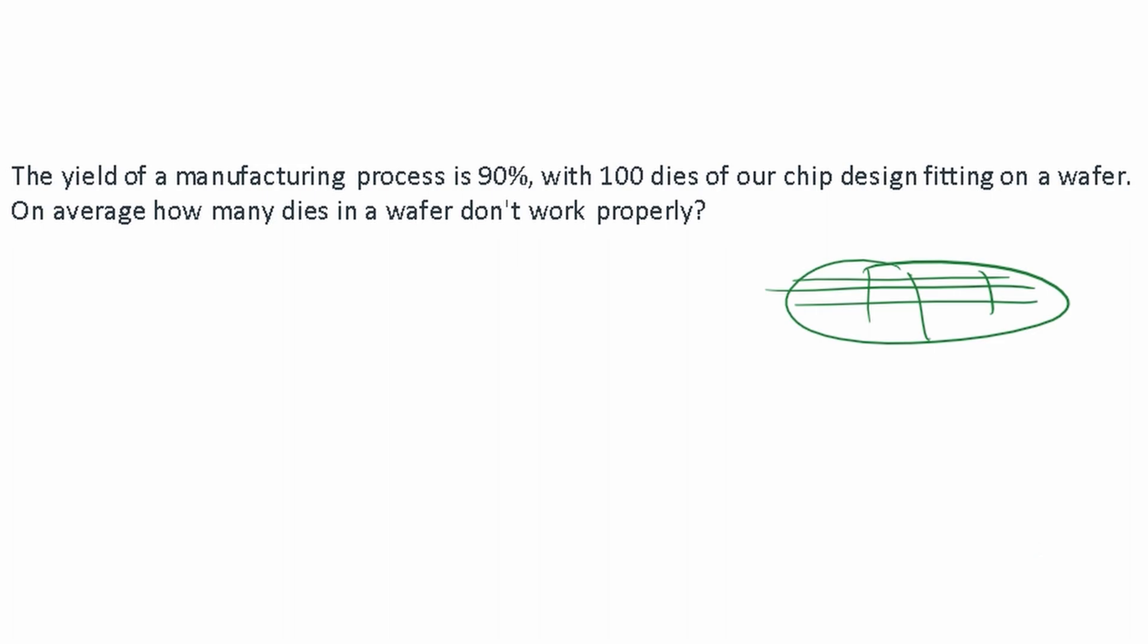Well, if our yield of the process is 90% and we have 100 dies made, this means we take our 100 dies and multiply by 90%. That means we get 90 that work.